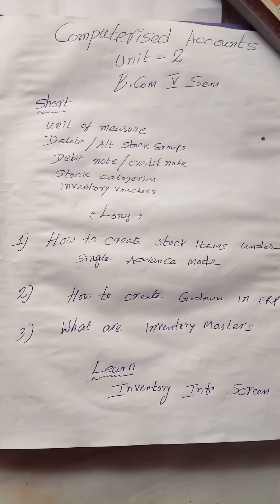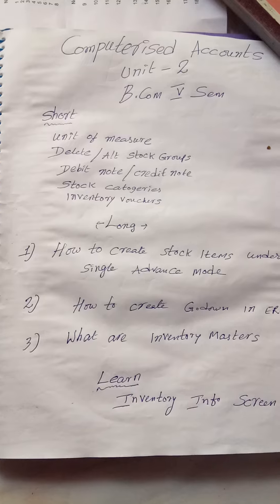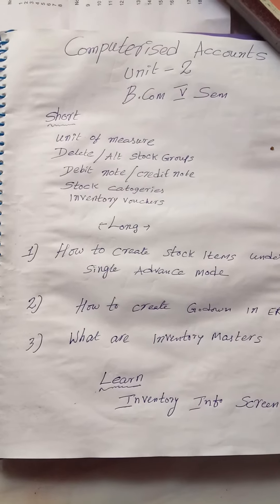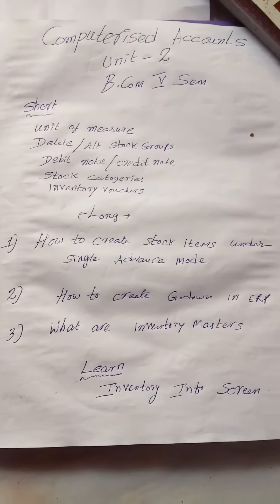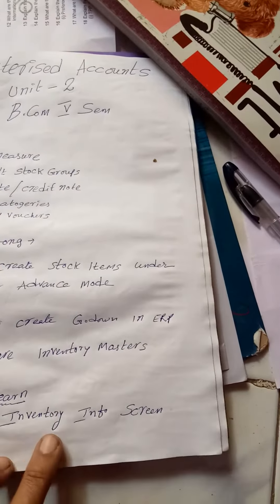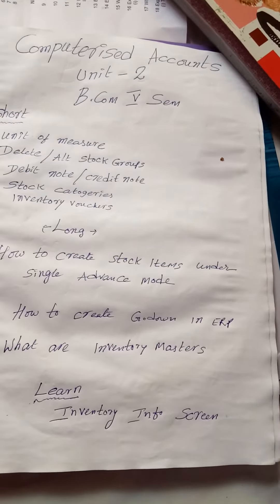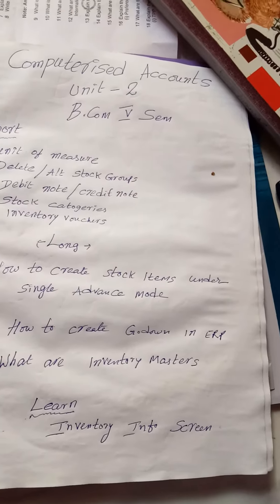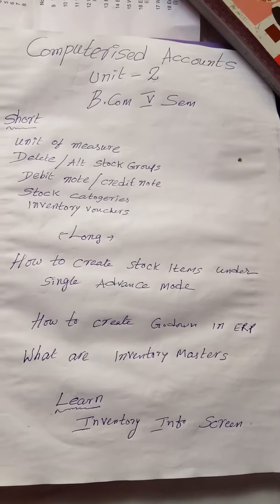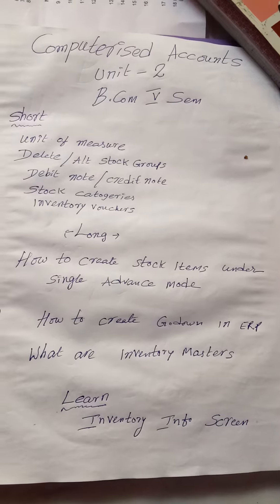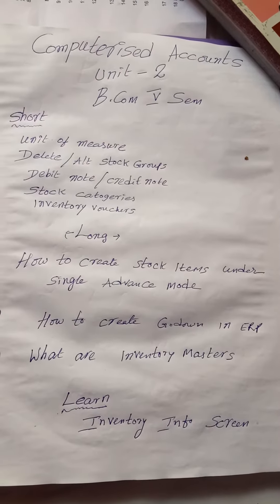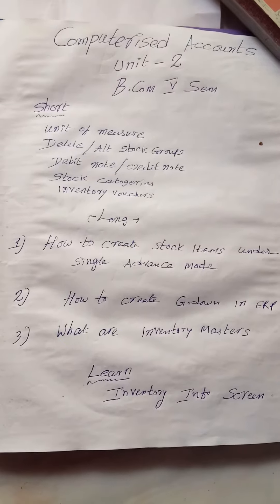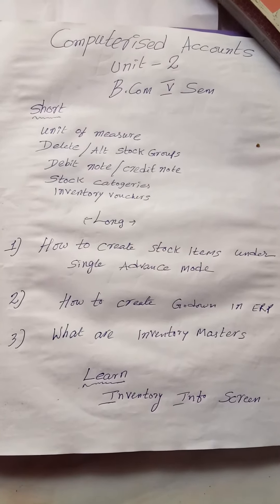Computerized accounting is a one and a half hour paper of 50 marks. You need to learn the inventory info screen. Since marks are reduced, no need to draw more and more screens — for one question, you can draw any one screen. I wish all the best to the students.